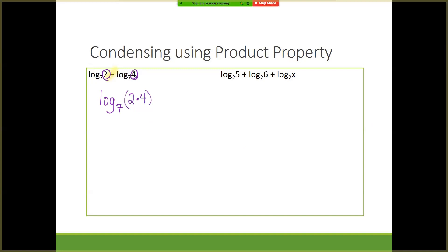For the second one, we're using that same product property because we have addition, but this time we have three terms. We're going to keep the log and keep the base — log base 2 stays the same. On the inside of my parentheses, I'm going to multiply these three things. I'm not checking to see if you can multiply 5 times 6 times x; you could write 30x, but I'm really just looking to see if you can get to that point. When we condensed them, all the addition went to all multiplication.